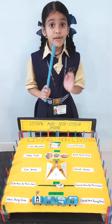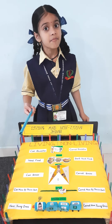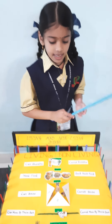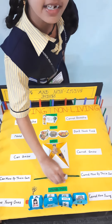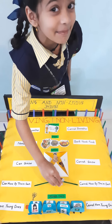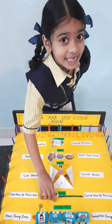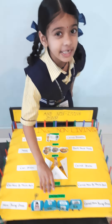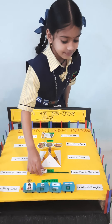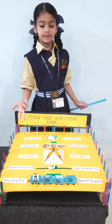Next one: move. Living things can move by their own. Can you see? It is moving. I am moving it because it is just a paper dog. If it was a real dog, it would have run by its own. But non-living things cannot move by their own.